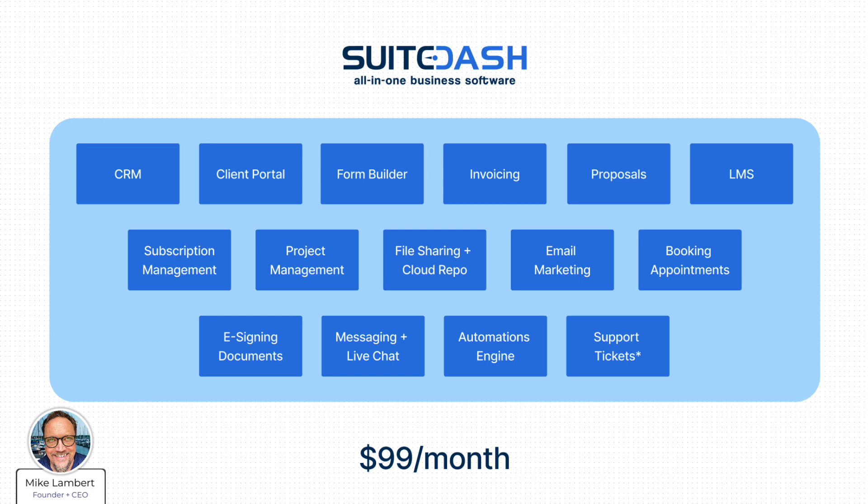Each one of these — CRM, invoicing, project management for example — represent a specific software niche where many competitors are operating and producing software that operates only in this niche, and therefore has the capability of being a monthly or yearly payment for you. However, SweetDash combines all of these, 15 in this example, into one and the most you would possibly pay is $99 a month. In each one of these niches, an individual product would likely cost you $15, $20, maybe $50, maybe $99 a month, so you can see where the value is.